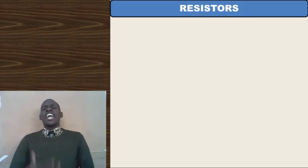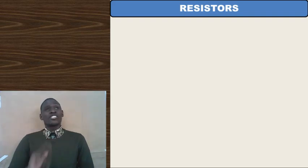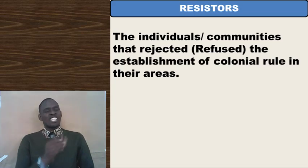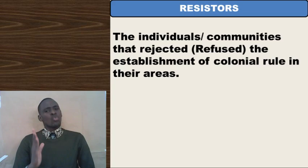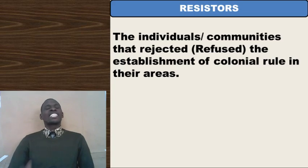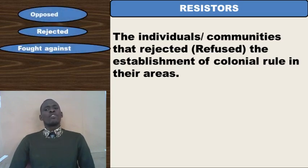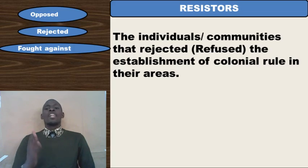Another section of people never accepted the establishment of colonial rule — they refused it. These people are called resisters. Resisters were individuals or communities that opposed, rejected, refused, or fought against the establishment of colonial rule in their areas.